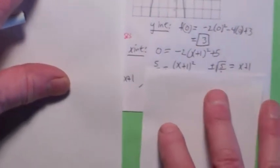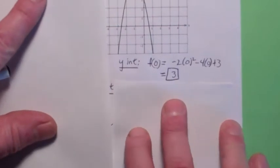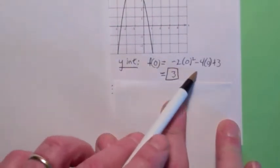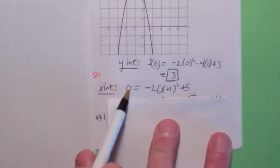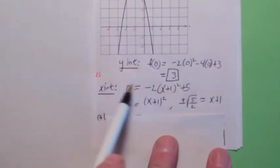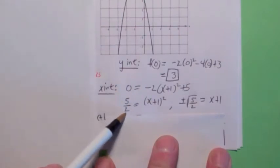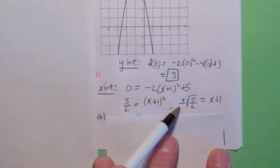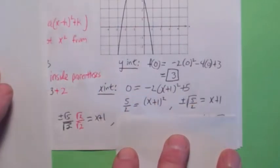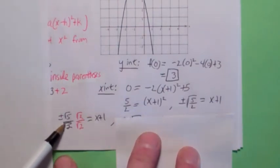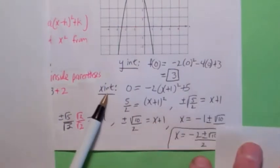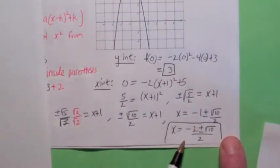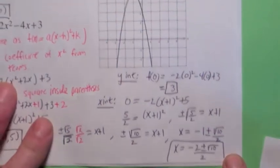Let's find the y-intercept — it's the value of y when x is 0. If you go back to the function and plug in 0, you get 3. For the x-intercepts, set y equal to 0. Subtract 5, divide by negative 2, and that becomes positive 5/2 equals (x + 1) squared. Take the square root — don't forget plus or minus. Rationalize the denominator by multiplying top and bottom by square root of 2. This becomes ±√10 over 2, then subtract 1 and get the LCD of 2. So the x-intercepts are at (−2 ± √10) / 2.